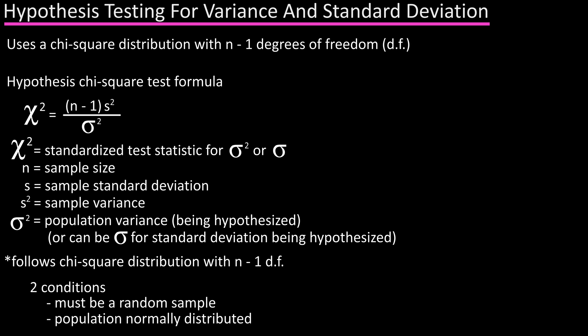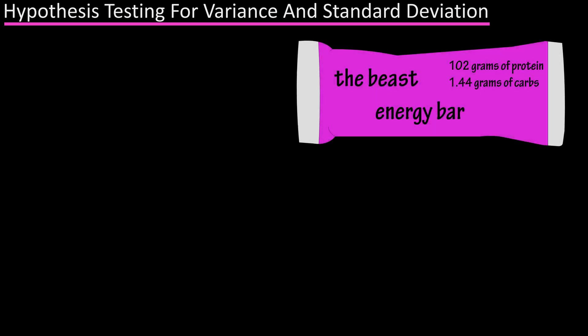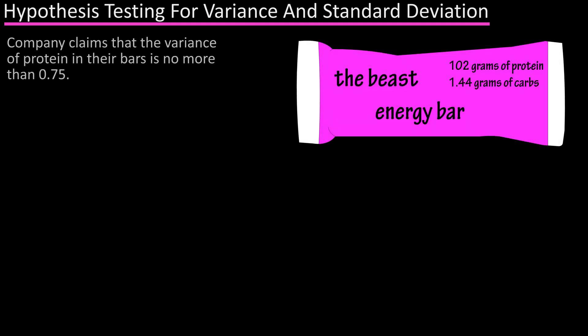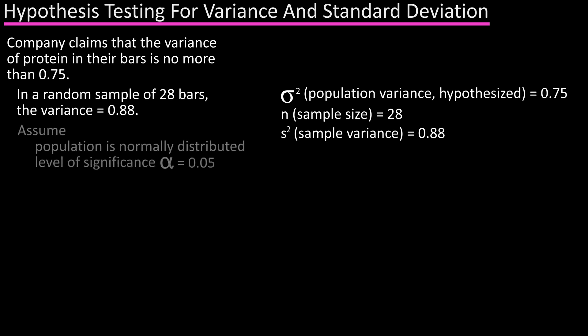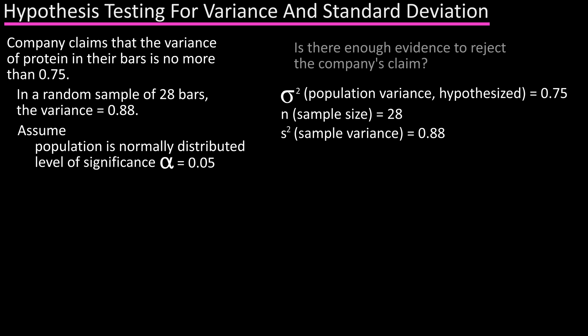Let's go through an example step by step. A company that makes a popular energy bar claims that the variance of the amount of protein in the bars is no more than 0.75. You think that this is incorrect. You find in a random sample of 28 bars the variance to be 0.88. Assume the population is normally distributed. At a level of significance of alpha equals 0.05, is there enough evidence to reject the company's claim?